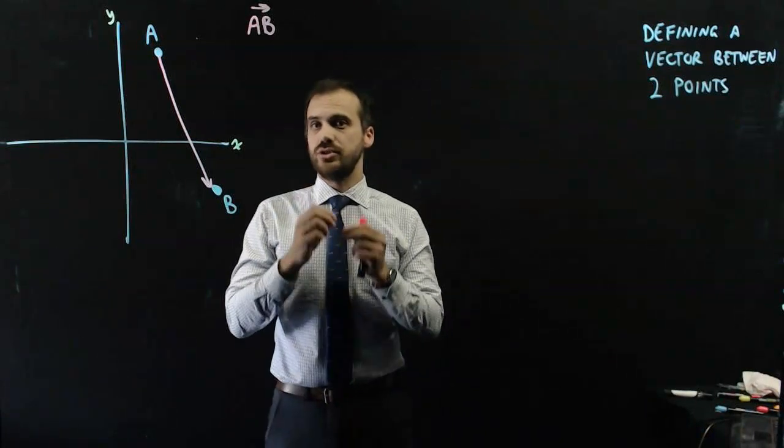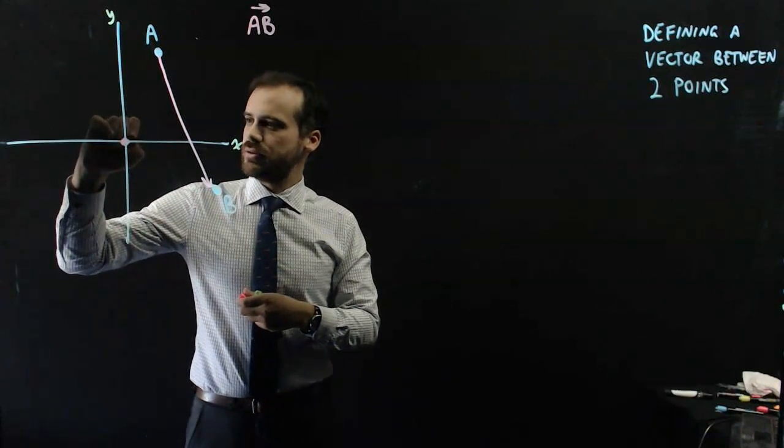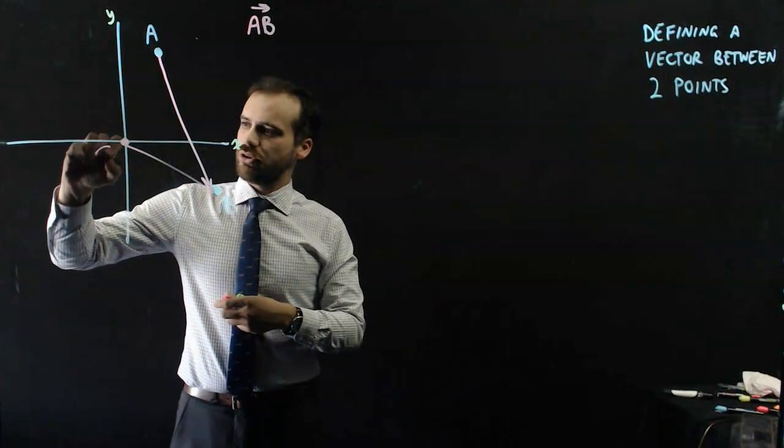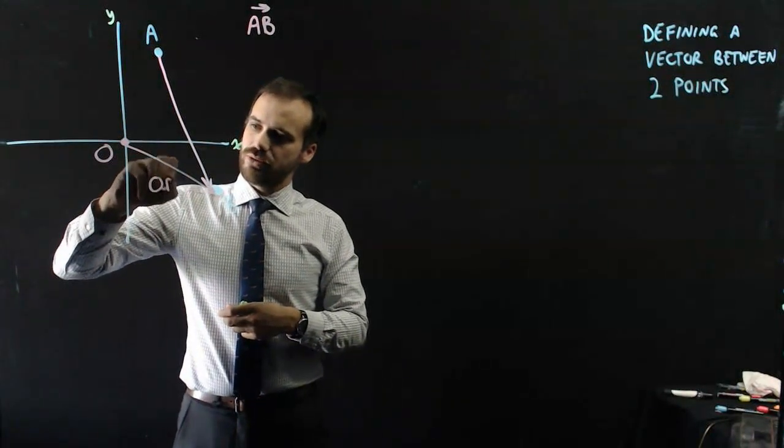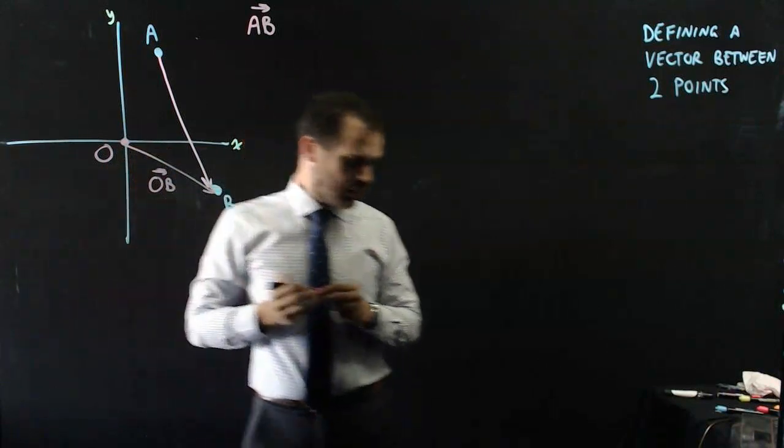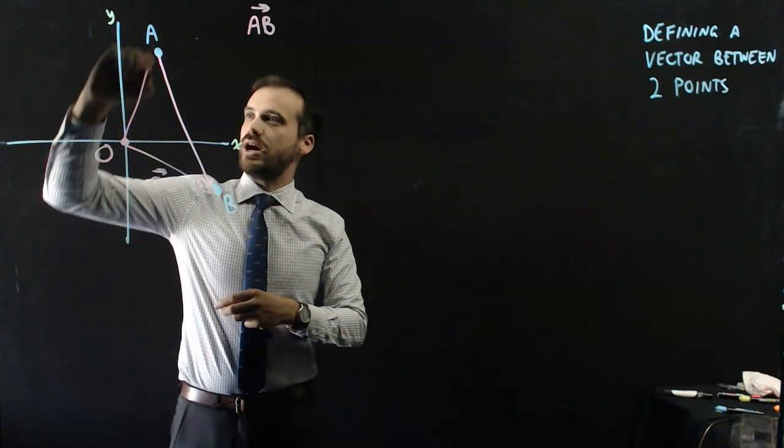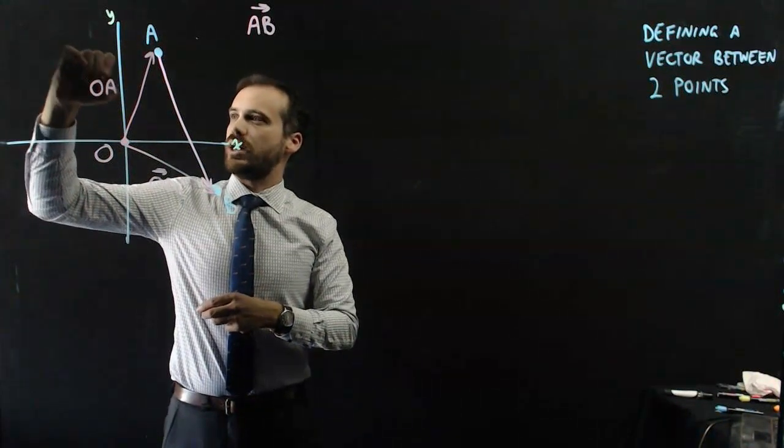So we're going to use two position vectors. I'm going to start here at the origin, and I'm going to draw in a new vector here. Now, I'm going to call the origin O, which means that this vector here is OB. Sorry about the squeaking. Now, we've got another position vector here, O to A, which I will call vector OA.